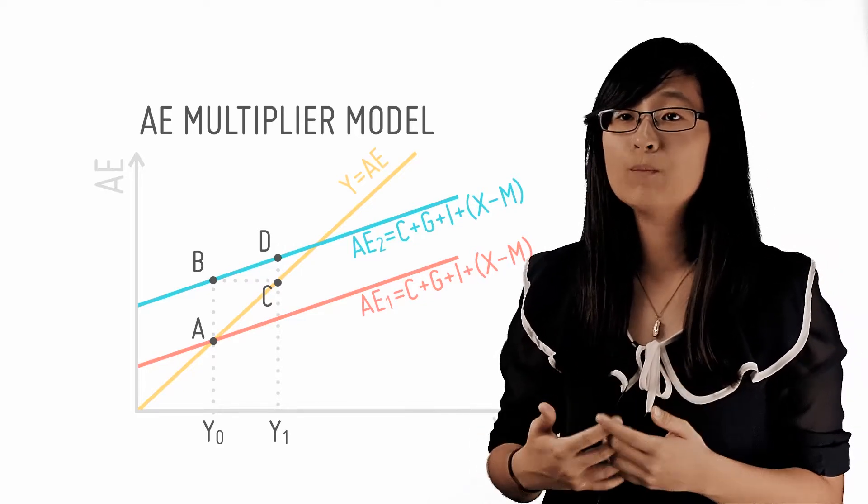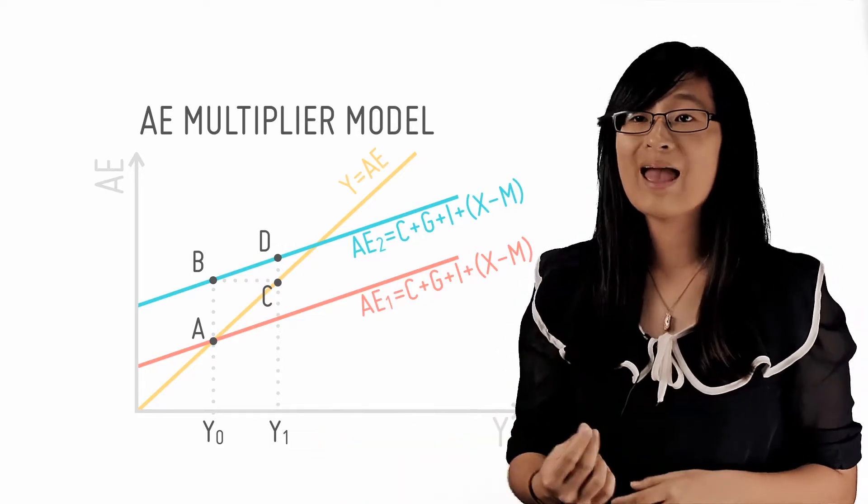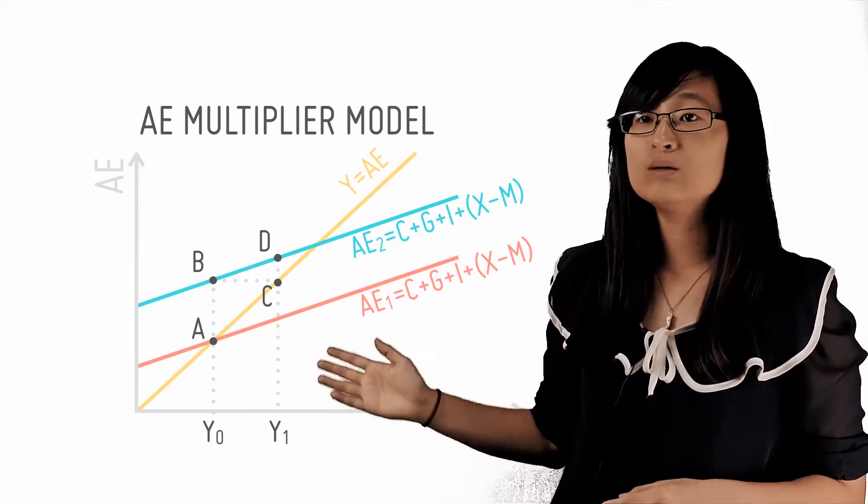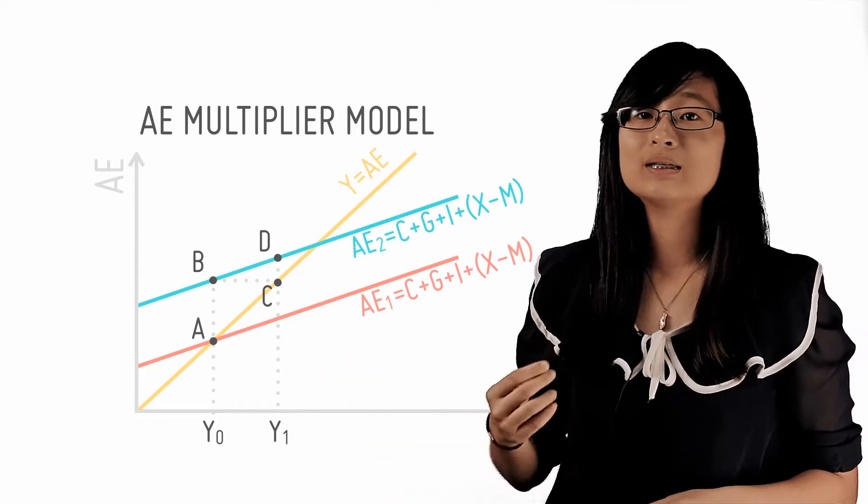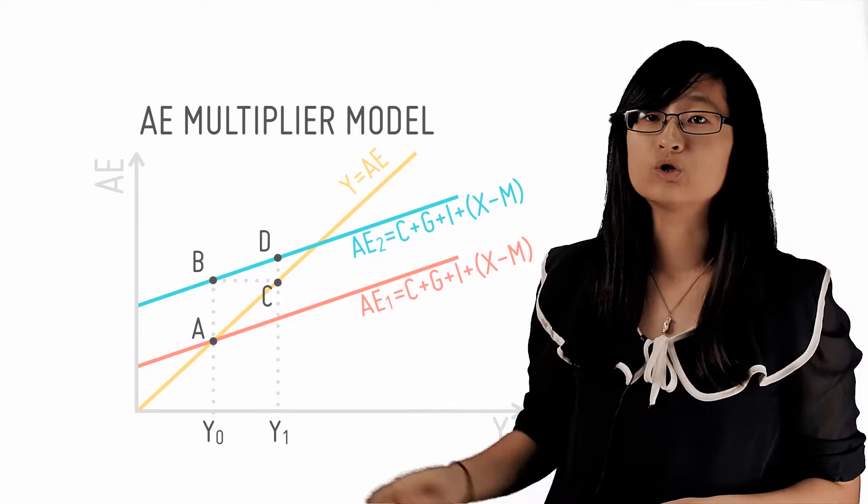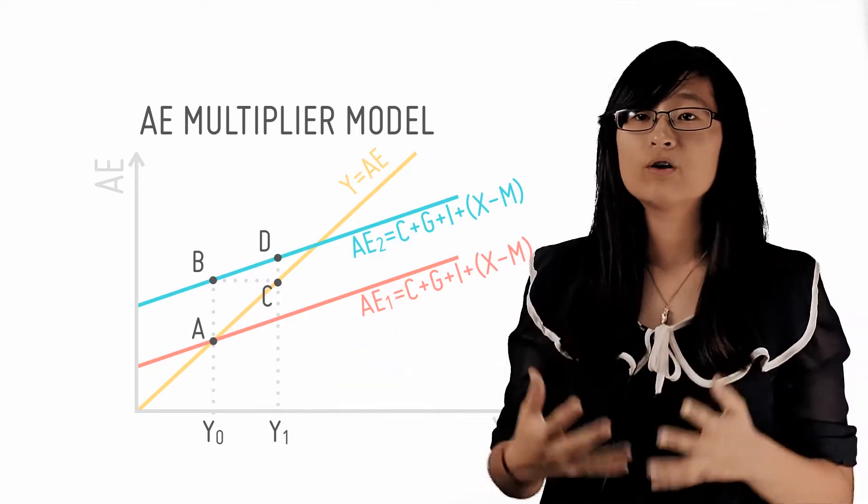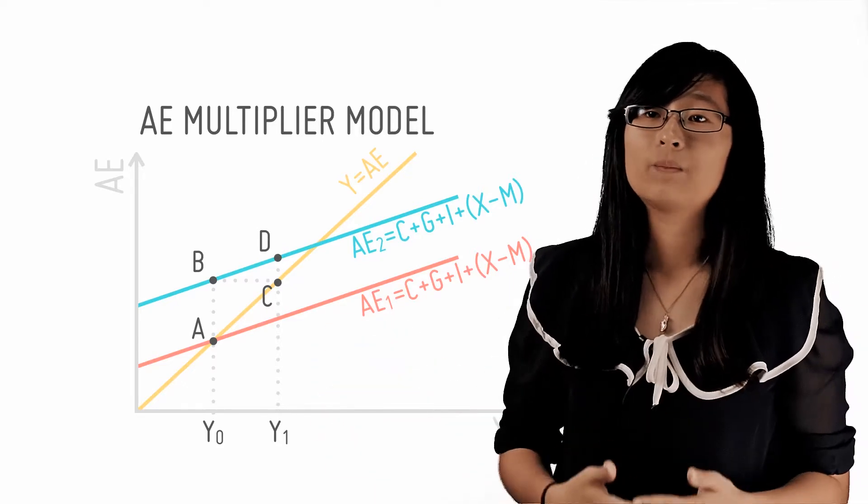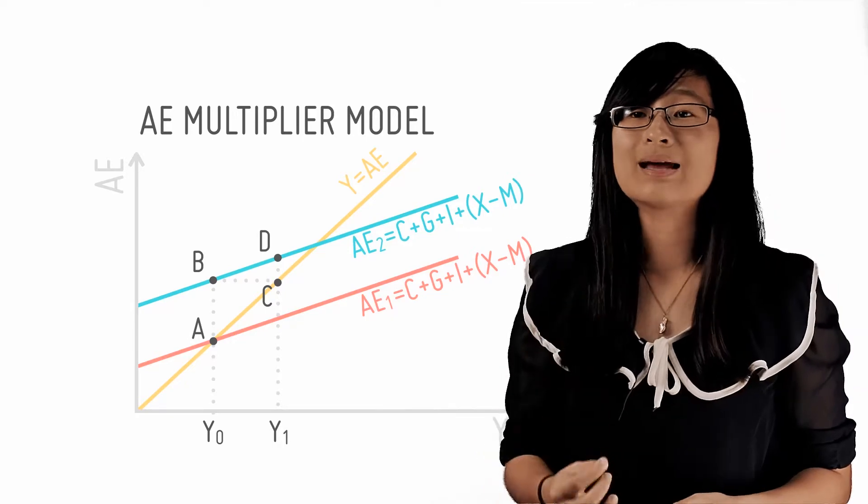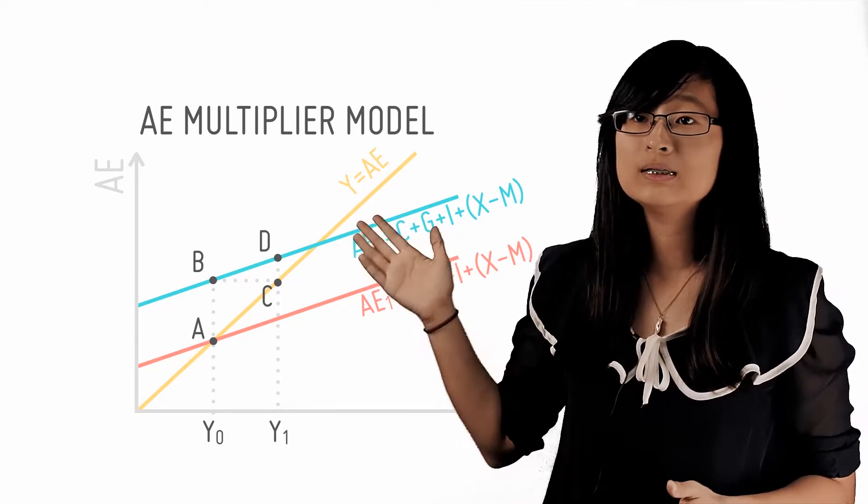Hence, we see that at the output level Y1, planned aggregate expenditure, which is DY1, once again exceeds actual national output, which is CY1. So firms draw upon their stocks and spare capacities and an unplanned disinvestment of CD occurs.